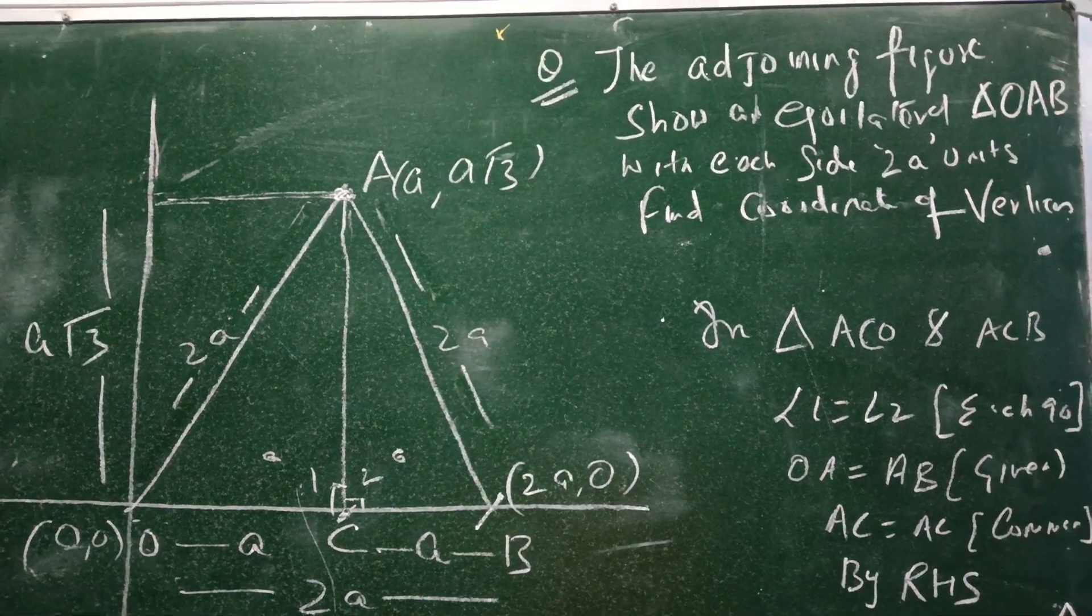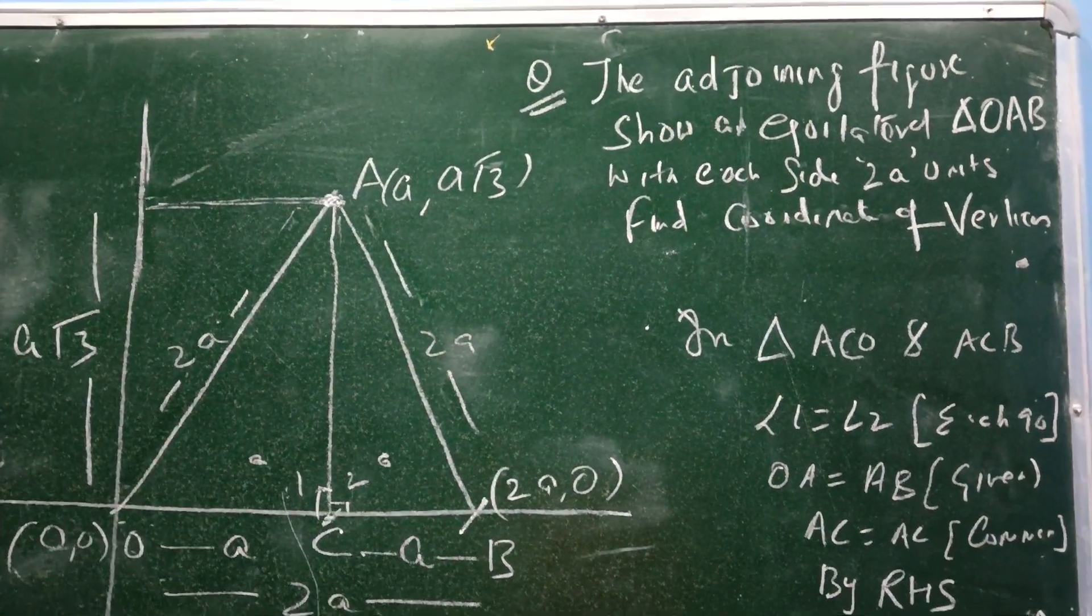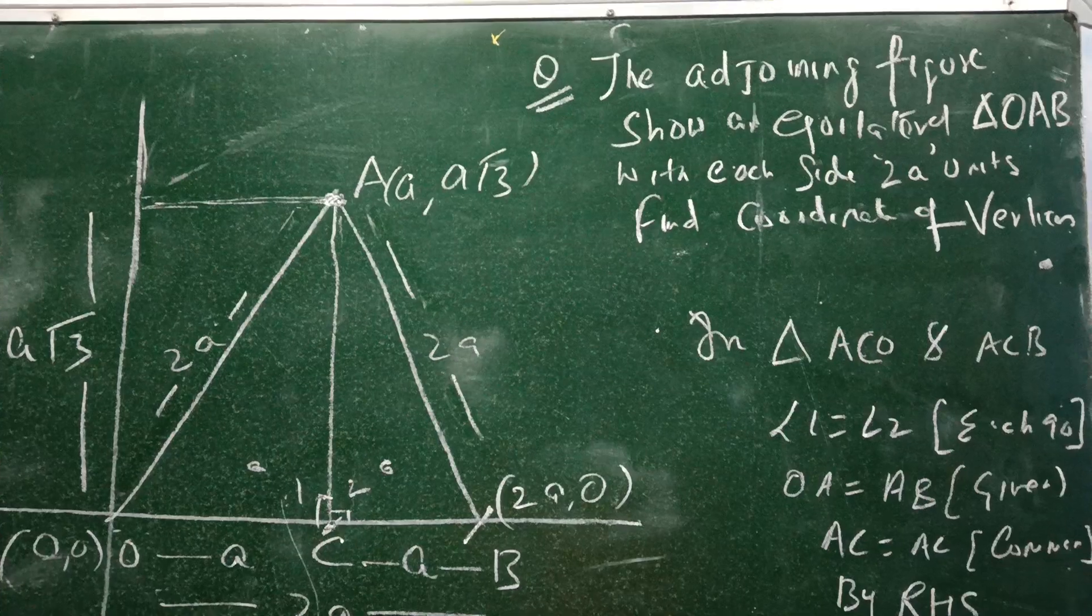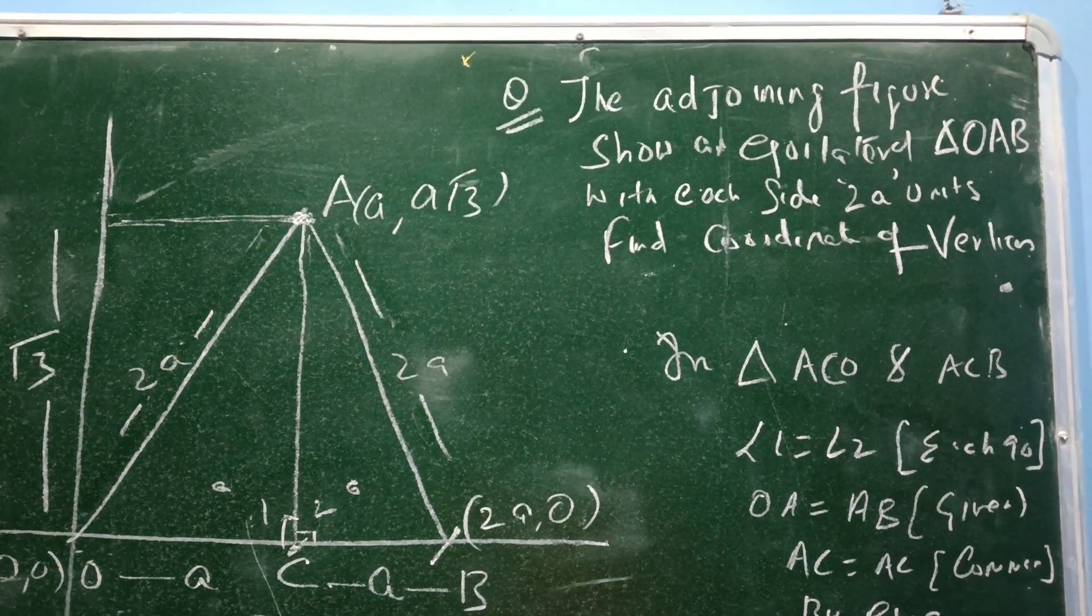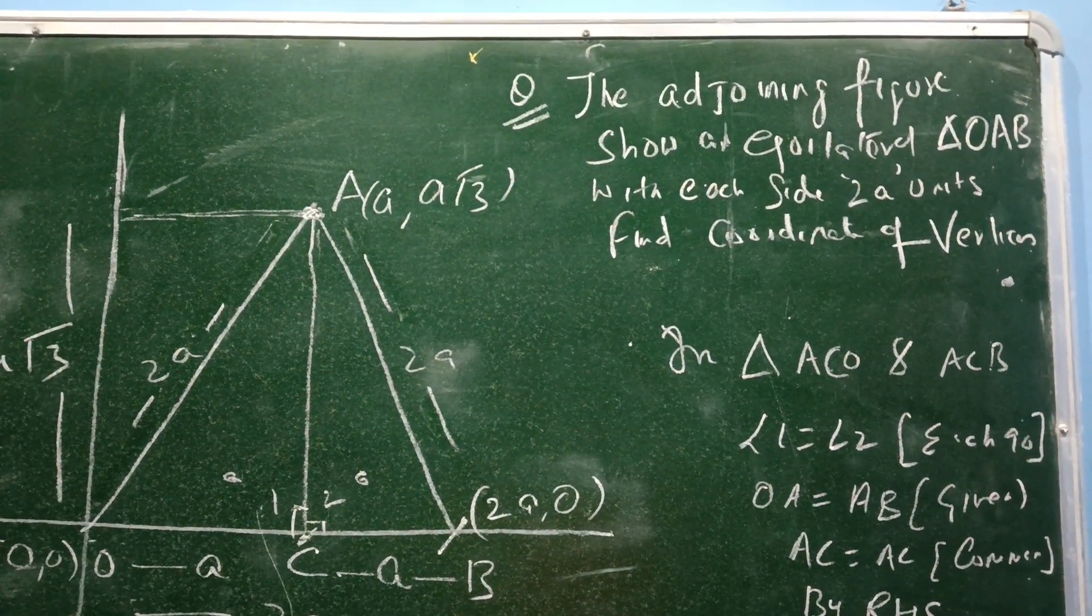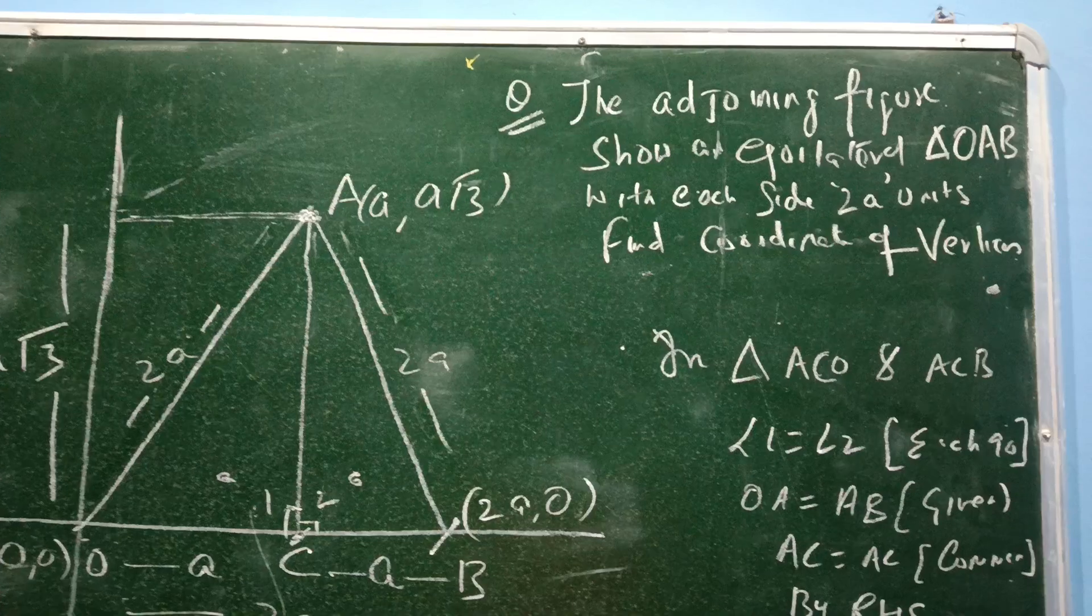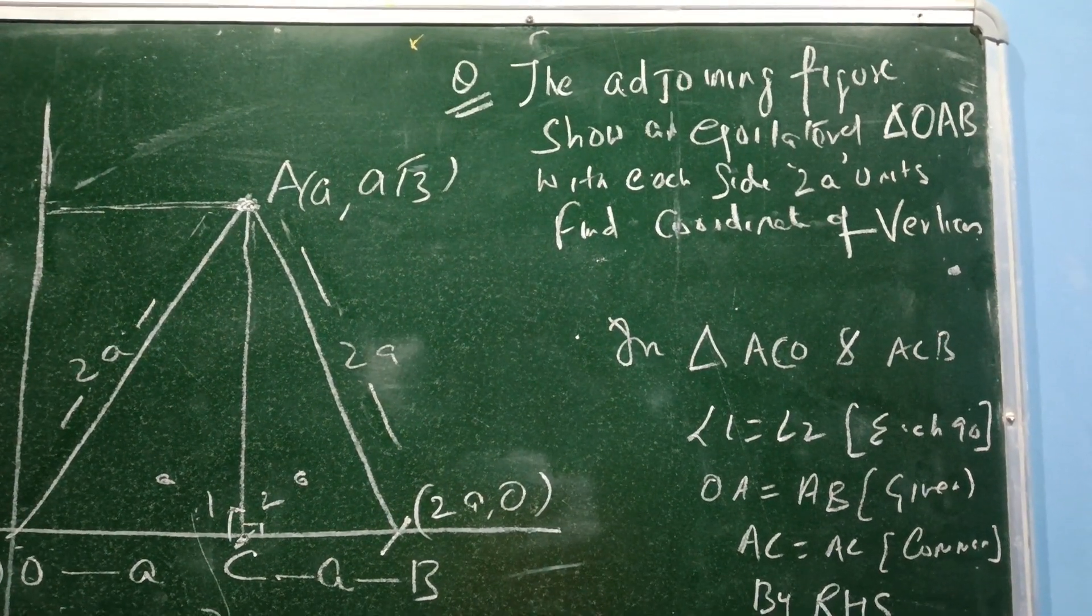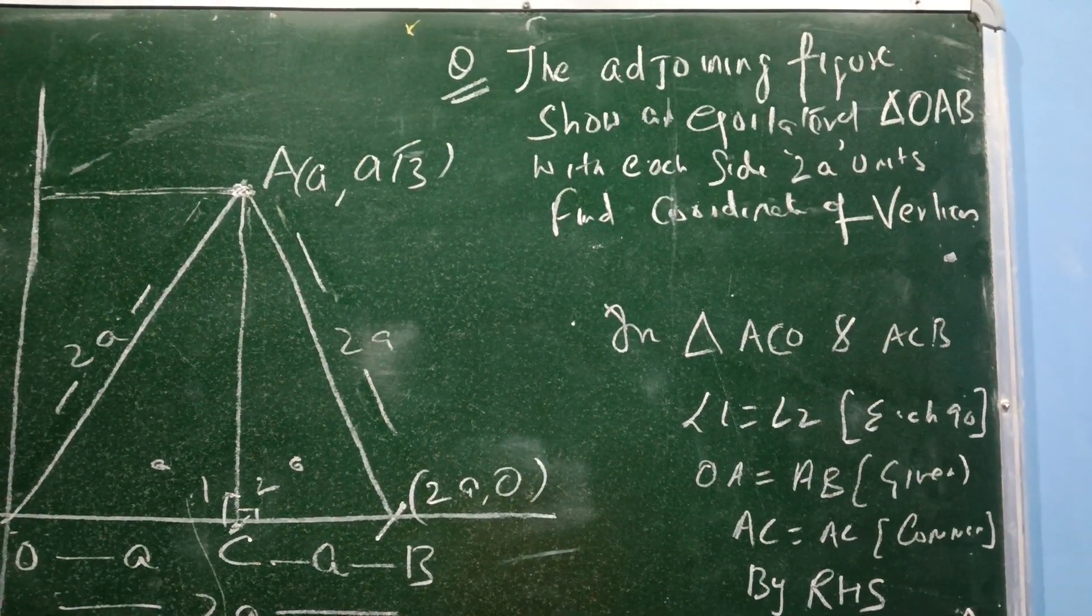Hello everyone, we are back with a new question from class 9th coordinate geometry. The adjoining figure shows an equilateral triangle OAB with each side 2a units. Find the coordinates of the vertices of the triangle.